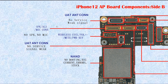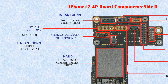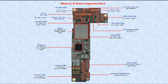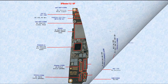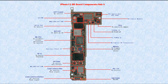ALS — ambient light sensor. This one is the UAT antenna connector, up antenna connector — if broken, it causes no service or weak signal. That's all for iPhone 12 AP board component side B. Now let's go on to the iPhone 12 BB board, baseband board component side A.